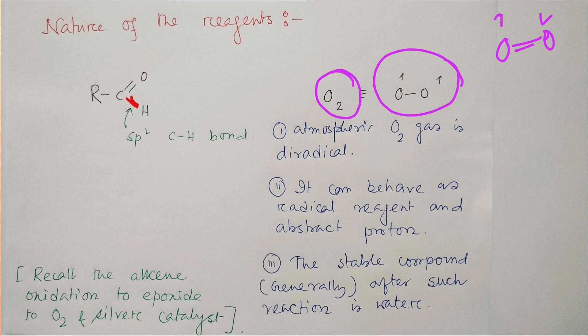This oxygen can act as a radical reagent and perform the oxidation process, and this is one of the greenest methods. Generally, after oxidation with atmospheric oxygen, the stable product is oxide or water because the oxidation state is -2, which is the stable oxidation state of oxygen.